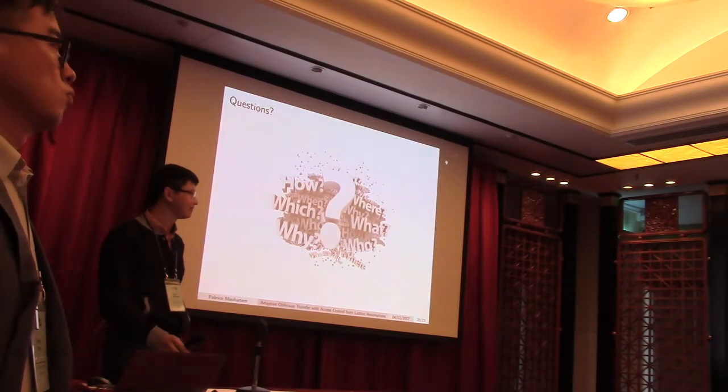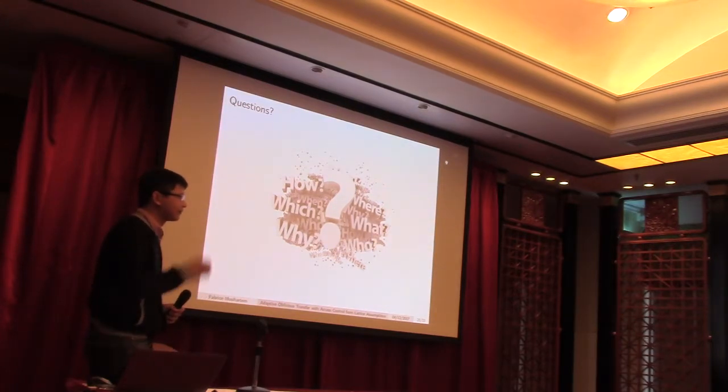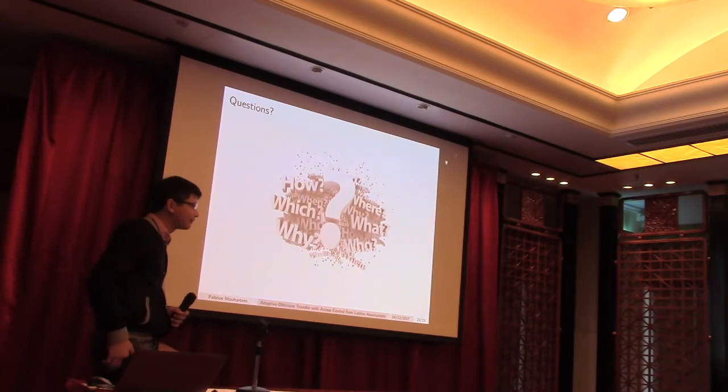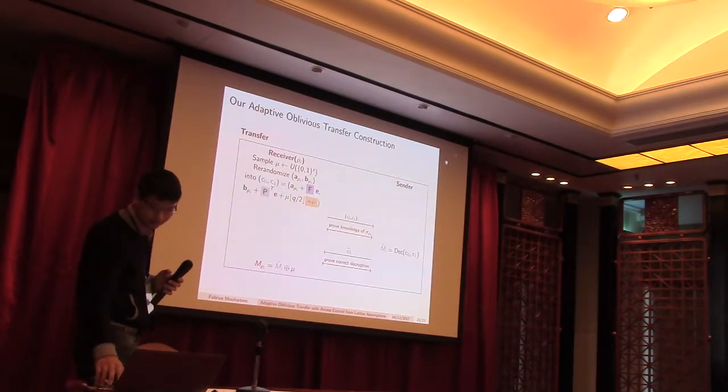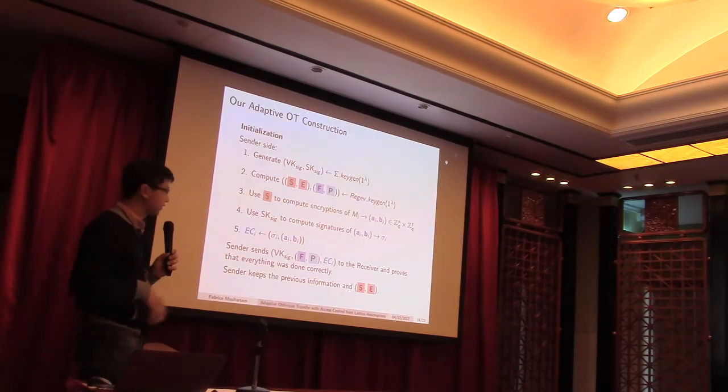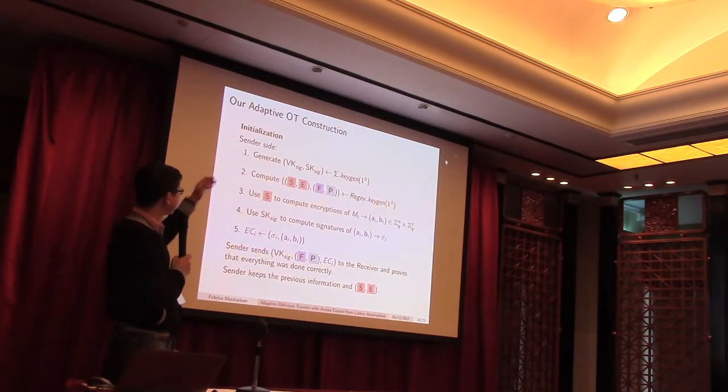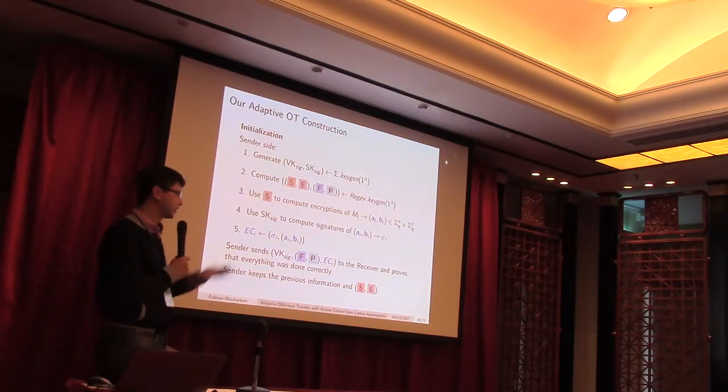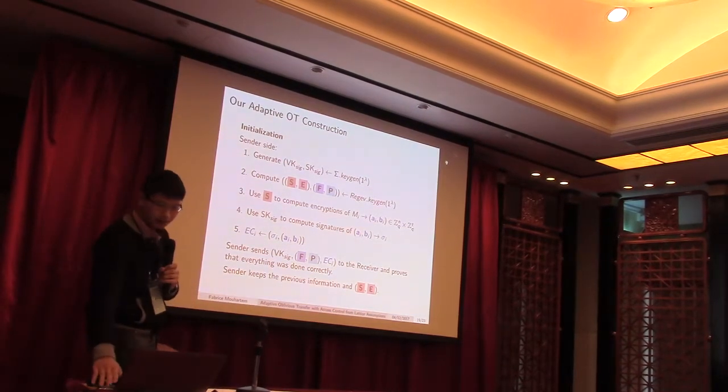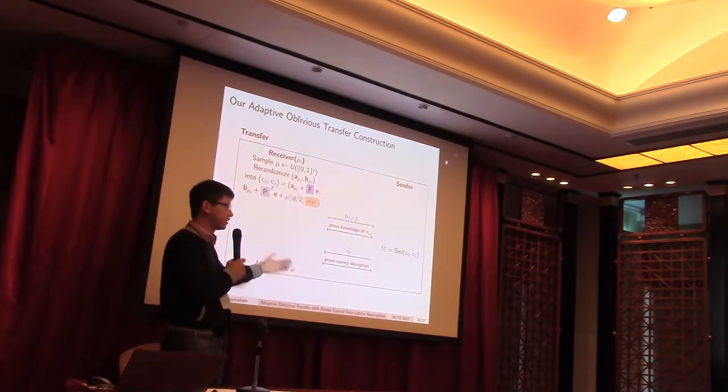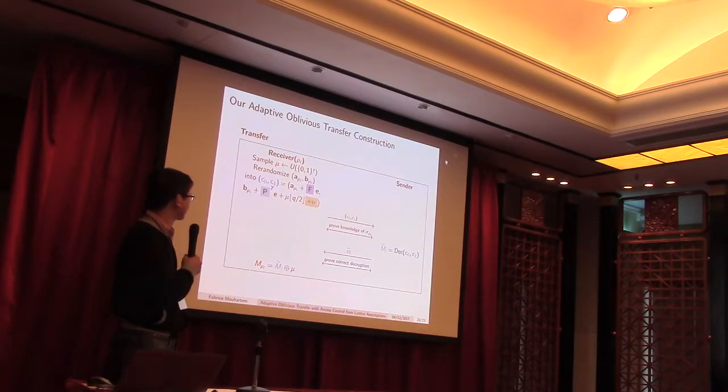So maybe I'll ask one. Let me get a basic question first. So do you need to download the whole database first? So yes, actually it's normal in the oblivious transfer setting. It has this initial phase, which has a linear cost in the size of the database. Because in the end, what we want to have is a transfer phase, which is quite efficient. So it's kind of the first phase, which allows efficient transfer.